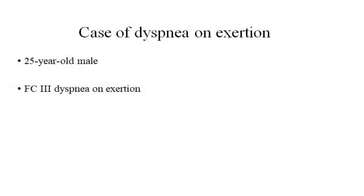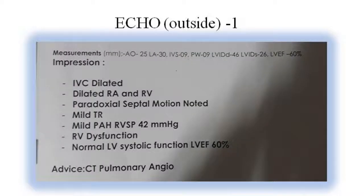Instead of the usual active recall questions that I ask in most of my videos, I thought I'll present this particular video in the form of a case study format. We have a case of dyspnea on exertion — a 25-year-old male who came to our hospital with functional class 3 NYHA dyspnea on exertion. Before coming to our hospital, this patient had gone to various other hospitals, and this is one of the echo reports he had gotten initially.